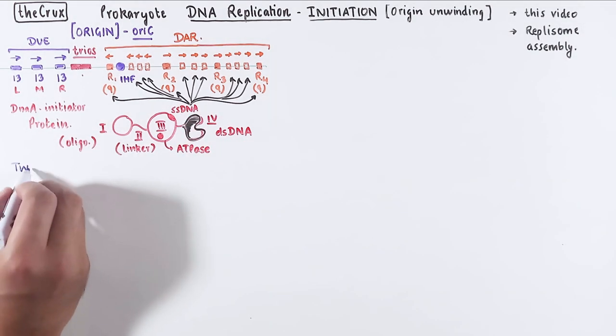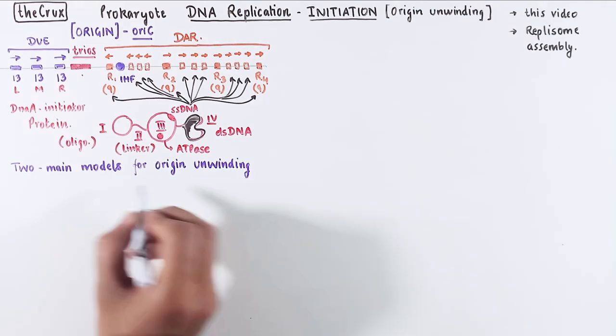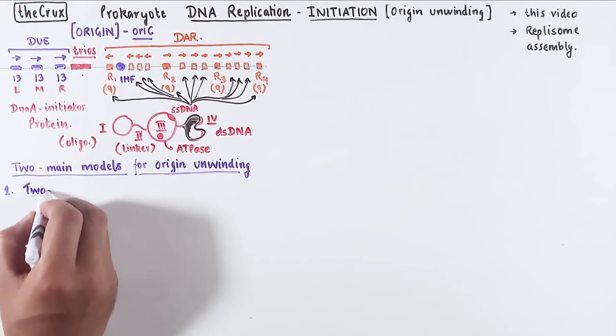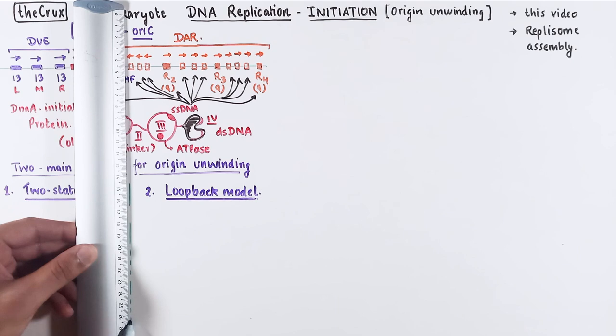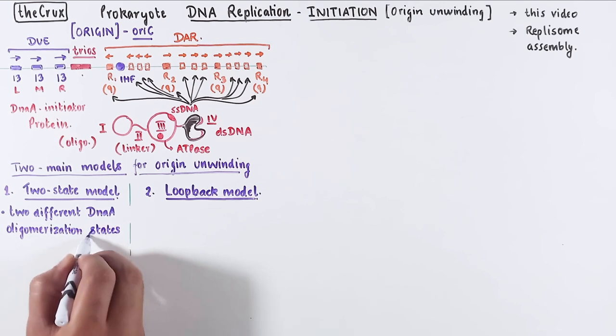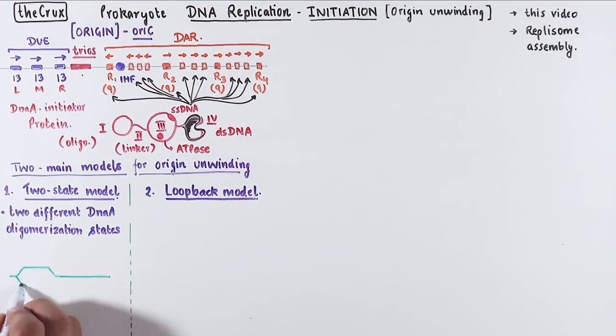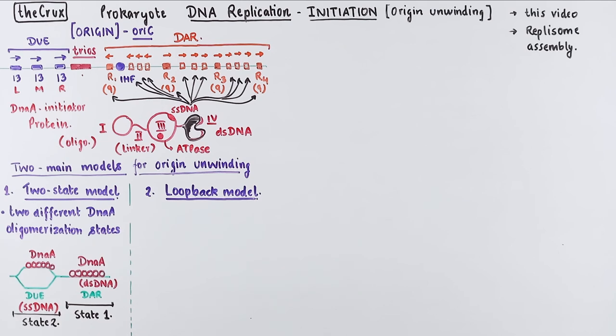So now that we have our basic ground covered, let's talk about the origin unwinding. There are two main models to go about thinking of the origin unwinding. One is called a two-state model, and the other is called a loopback model. Let me introduce them quickly, and then we will dive into the details. The two-state model suggests that there are two different DnaA oligomerization states. What this means is that in the final step of origin unwinding, there is a DnaA oligomer present at the DAR region, which is associated with the double-stranded DNA. This is the first state. And then there is another DnaA oligomerization that occurs at the DUE region, which occurs in the context of single-stranded DNA. And this is the second state.